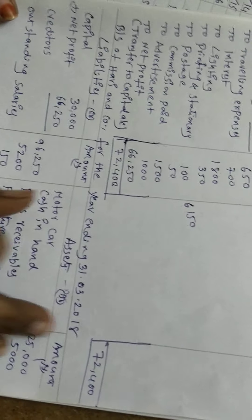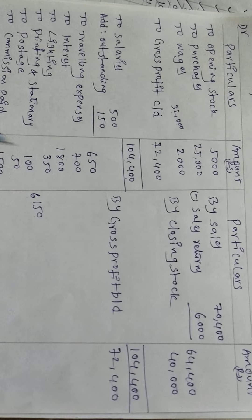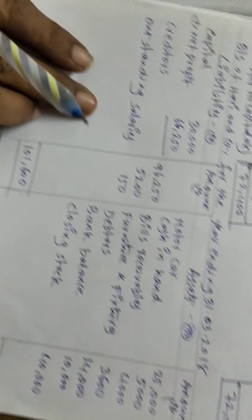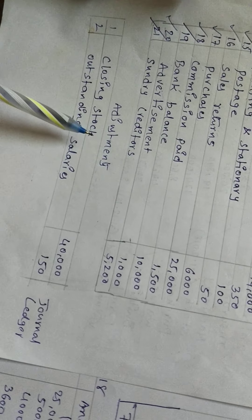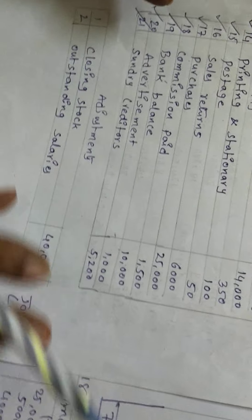Like this we have to prepare final accounts: trading account, profit and loss account, and balance sheet. This was a previous question paper problem. Thank you.